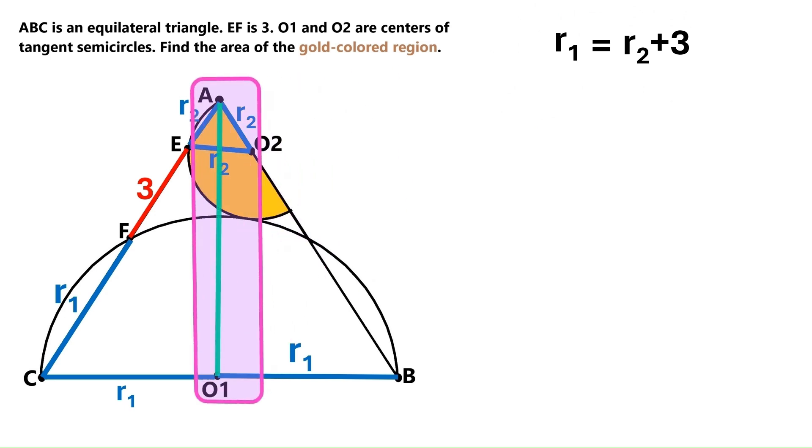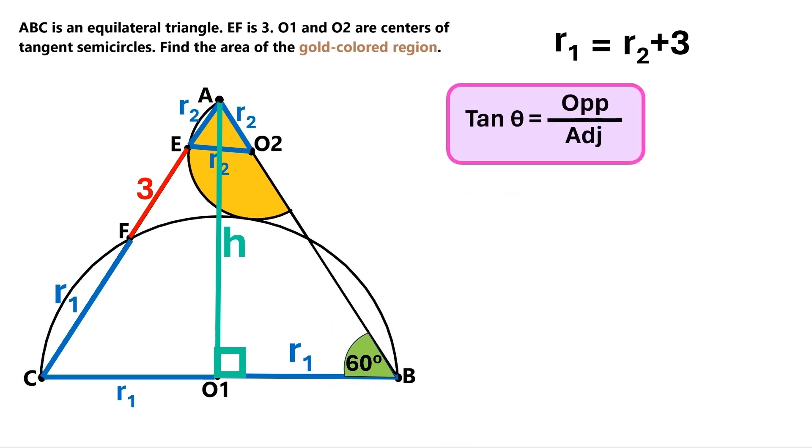Now, let's draw this height for the big equilateral triangle. We'll call it H, and this angle is a right angle, and this angle is 60 degrees. We'll use the tangent function to find H. The tangent of an angle is the length of the opposite side divided by the length of the adjacent side. Our angle is 60 degrees, so let's put 60 here.